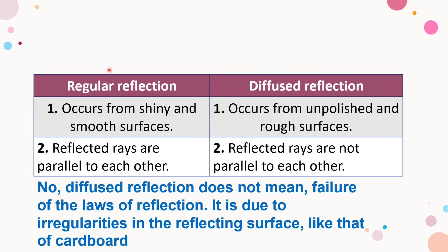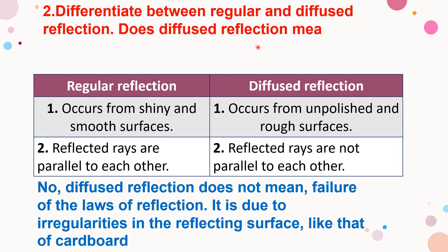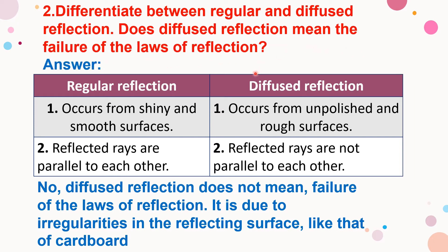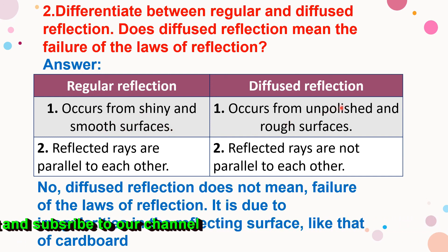Next question: differentiate between regular reflection and diffuse reflection. In regular reflection, it occurs on smooth polished surfaces. In irregular or diffuse reflection, it occurs on unpolished and rough surfaces. In regular reflection, all the reflected rays are parallel to each other.